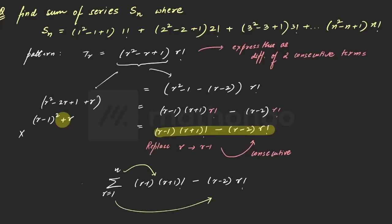So what the answer would be? We will be getting this will be n minus 1 into n plus 1 factorial minus of minus 1. You will get minus 1 into 1 factorial, so we can say plus 1. So the final answer that we are looking forward to is this particular problem.